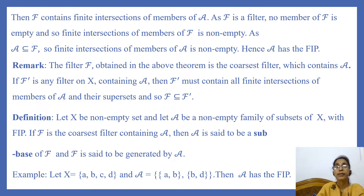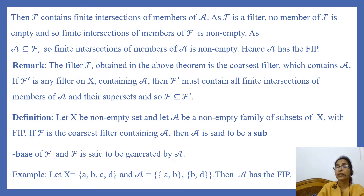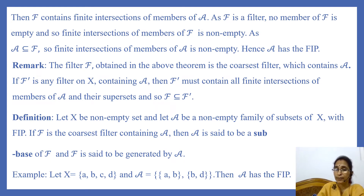Now we have a remark. The filter F obtained in the above theorem is the coarsest filter which contains A. Why? Suppose F dash is any filter on X containing A, then by definition of a filter, F dash must contain all finite intersections of members of A and their supersets. And so F is contained in F dash. That means F is contained in every filter on X which contains A. So F is the smallest filter on X containing A, that means F is the coarsest filter which contains A.